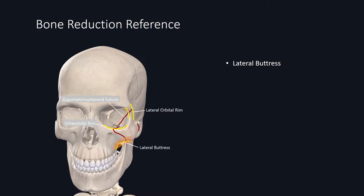Key references are something not commonly described, but this is what I generally use to ensure that bony reduction is satisfactory. Along the lateral vertical buttress, the curvature along the zygomatic maxillary buttress is a key visual reference that you want to restore. Higher up along the lateral vertical buttress at the zygomatic frontal suture line, the curvature of the lateral orbital rim along its anterior and posterior aspect is a key visual reference that we attempt to restore.